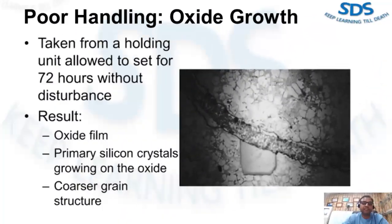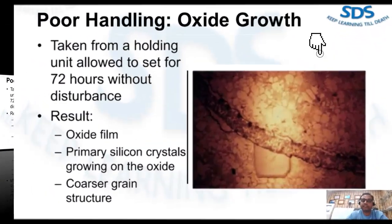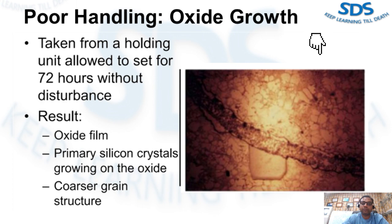Poor handling and oxide growth: this figure shows a sample taken from a holding unit at the casting machine that was allowed to sit for 72 hours at 1185 degrees Fahrenheit without disturbance. Note the oxide film and the primary silicon crystals growing on the oxide, and also note the coarse grain structure. Metal in this condition exhibits poor casting and machining characteristics. It is recommended that after 72 hours the holding furnace should be emptied and refilled with clean metal.